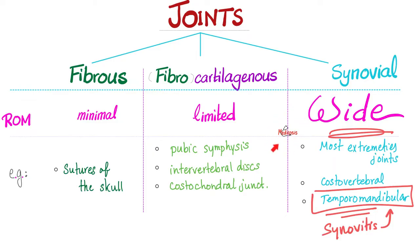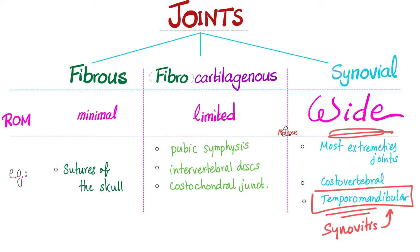Medicine makes so much sense once you understand what you're talking about — the basics are very important. Let me correct a mistake I've made before: in previous videos I told you that sacroiliac joints are cartilaginous. Not true. In fact, sacroiliac joints are synovial joints. That's why diseases characterized by synovitis, like inflammatory arthritis and the HLA-B27 arthropathies, can cause sacroiliitis — inflammation of the sacroiliac joint.